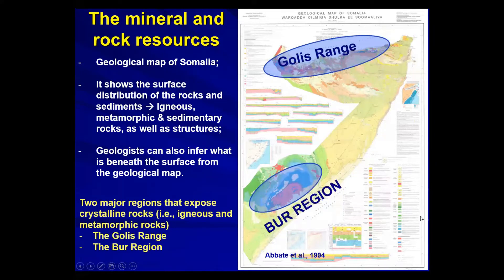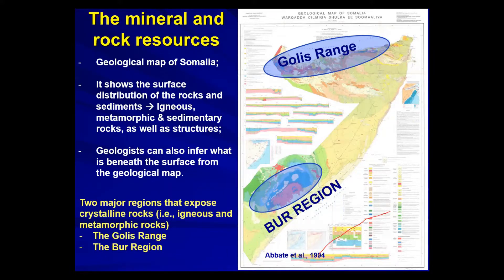There are two major regions that expose crystalline rocks: the Golis region and the Abo region. These are the basement rocks, and these two regions are the most potentially mineral-rich, whether for gemstones or industrial minerals. The rest of Somalia is covered by sedimentary rocks, which have their own benefits, but in terms of minerals and different types of rocks, these two regions are by far the most interesting and highly potential ones.